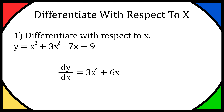Now if you have any x with a constant in front of it — for example we have minus 7x — what you can do is just remove the x. That's because we're effectively working with x to the power of 1. So you can imagine you would have x to the power of 1. We bring that power down, so that would be minus 7 times 1. We've got minus 7x to the power of 1, and we subtract 1 from the power, giving x to the power of 0, which is 1. That leaves us with minus 7. You can just remove the x, giving us minus 7.